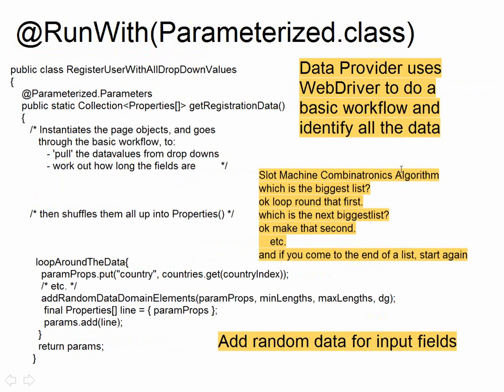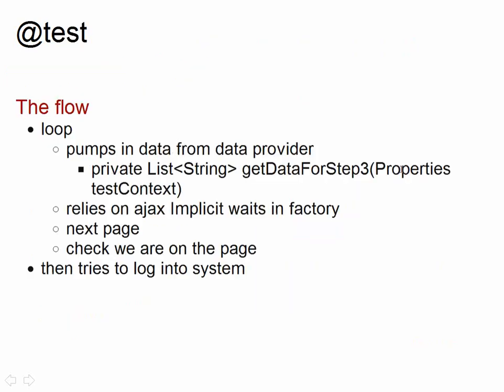In the test itself, we're using data-driven tests — one test that's data-driven. The part of the test that really does the work is the parameterisation method. It's the one that goes through the basic workflow, pulls all the dropdowns out, works out what the data is, and shuffles and randomises it into a big collection that is then fed through into the test. The test itself just takes the next row of data from the random data generator, works out what context it's in, and feeds that into the page object models to run.